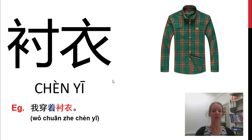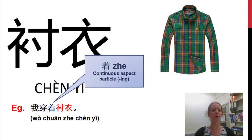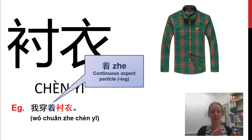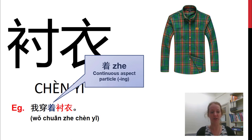我穿着衬衣. The word 着 here is a continuous aspect particle — it's a little bit like something's currently happening, a continuous state. It's sort of like the '-ing' in English. So: I am wearing a 衬衣. 我穿着衬衣.